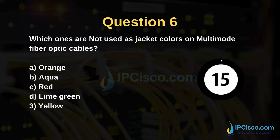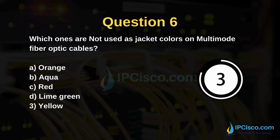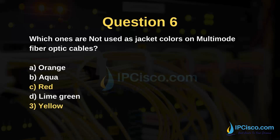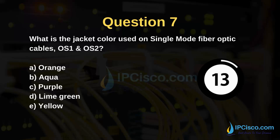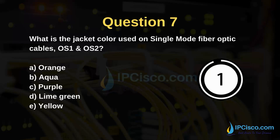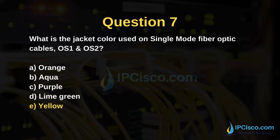Which ones are not used as jacket colors on multi-mode fiber optic cables? Options: orange, aqua, red, lime green, yellow. Red and yellow are not used for multi-mode fibers. What is the jacket color used on single-mode fiber optic cables for OS1 and OS2? Options: orange, aqua, red, lime green, yellow. Yellow is used on the jacket of single-mode fibers.